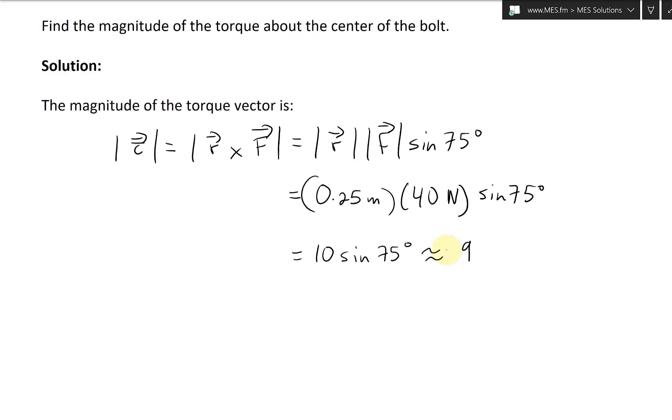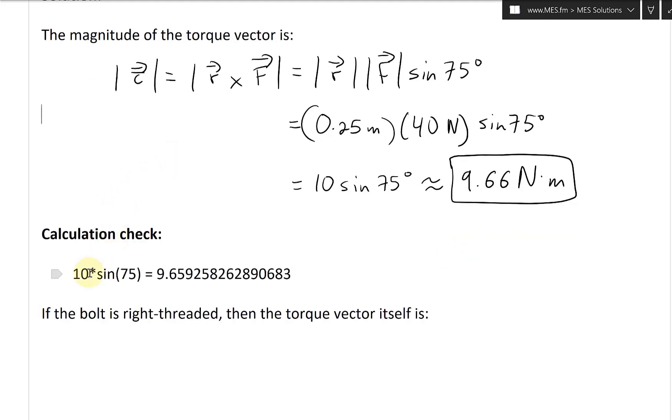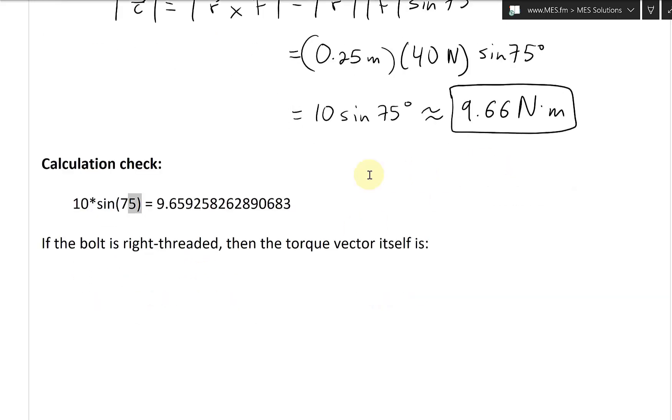That's 75 degrees. And then now this equals 2, plug in the calculator, it gets 9.66 Newton meters. And I'll solve this. And I'll just box this. And then I'll do a calculation check. And here's a calculation check. So again, you can go 10 times sine 75 using my built-in calculator in OneNote. So press equals space. And this automatically solves it with degrees. So you get 10 times sine 75 degrees. It's 9.659, et cetera. But you round up to 9.66.